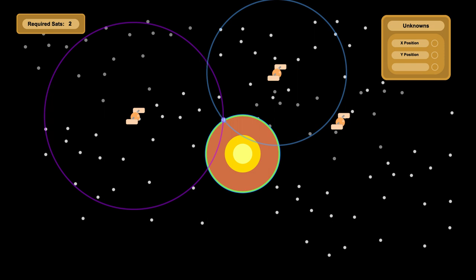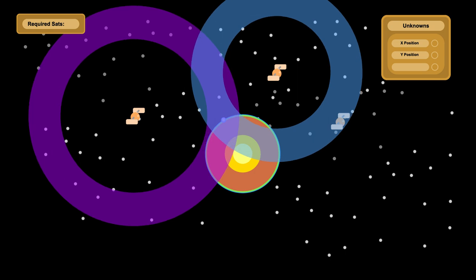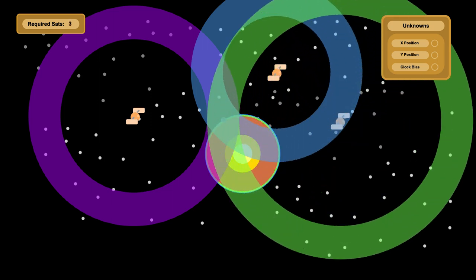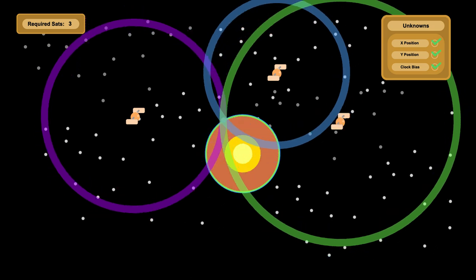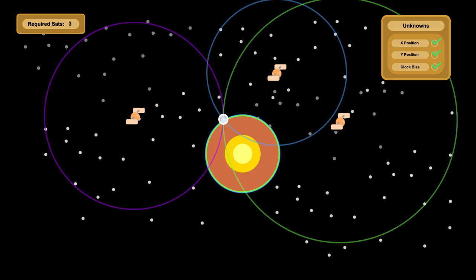But there's still the issue of clock bias making it very unclear what the distances actually are. Fortunately, because all the satellite clocks are in sync with each other, the clock bias is the same for all of them. This means it just becomes another unknown. So now, with the distance measurement of a third satellite, your phone can actually calculate your X position, your Y position, and your clock bias, allowing you to know where you are on planet Earth and how far you are from fast food.